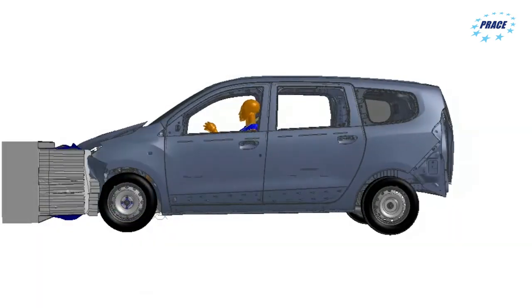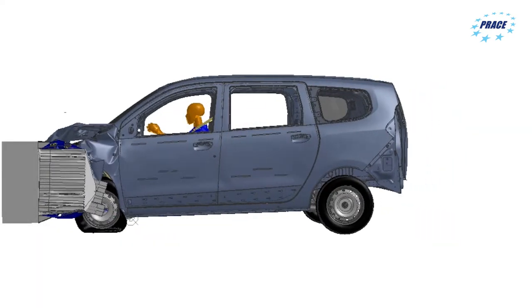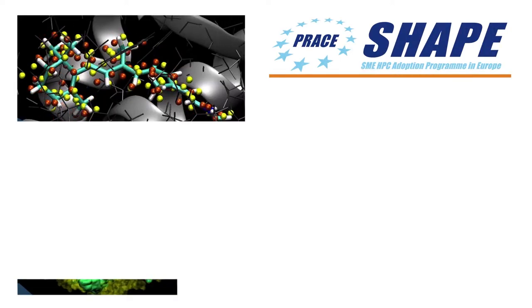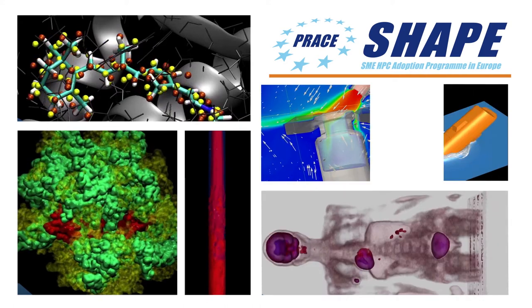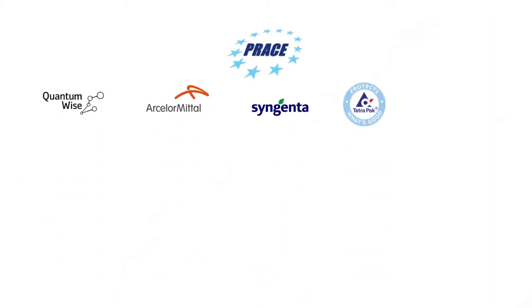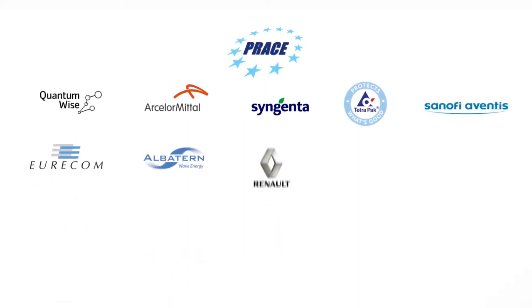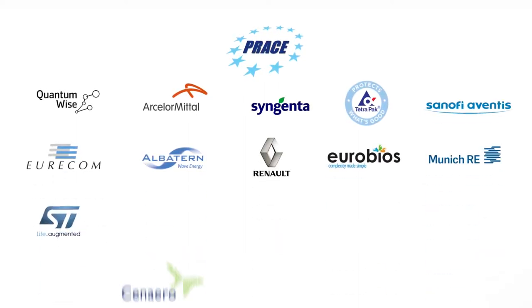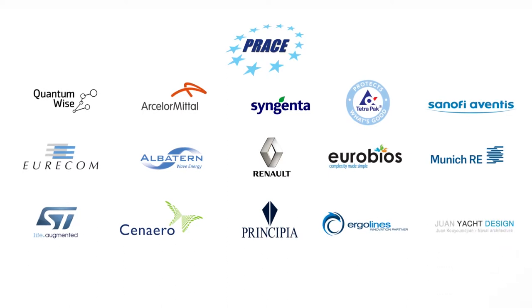The SHAPE program enables European SMEs in bringing their innovative products to the market faster. The PRACE infrastructure is a means for particularly small and medium-sized enterprises to take advantage of supercomputers that they would never have access to otherwise.